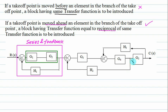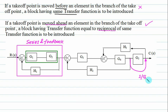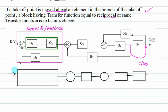If you shift this takeoff point ahead of G5, we will get these two blocks in series. So we require one additional block. Is it reciprocal? We are moving ahead — ahead is reciprocal. So this is 1/G5. So we will modify this and write out. Result of this one: first is G1·G2. So the series is over, and that will become the numerator.